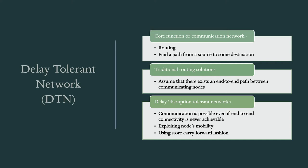The first one is Delay Tolerant Network or DTN. The core functionality of a communication network is routing, which involves receiving a packet or message and determining who to forward it to. A router might be connected to many different devices, networks, or other routers, and it decides who to forward the packet to. The next thing is finding a path from a source to some destination. Routing is only deciding who to forward the packet to in a very short area, whereas finding a path from source to destination means finding the entire path through which the packet has to travel.